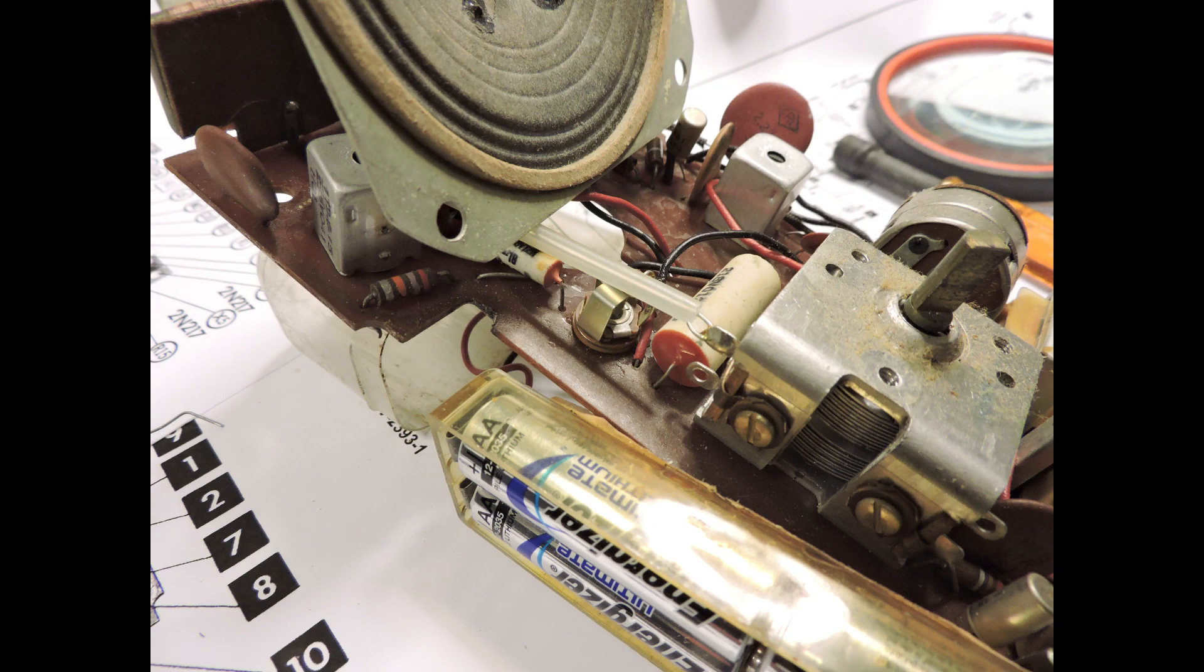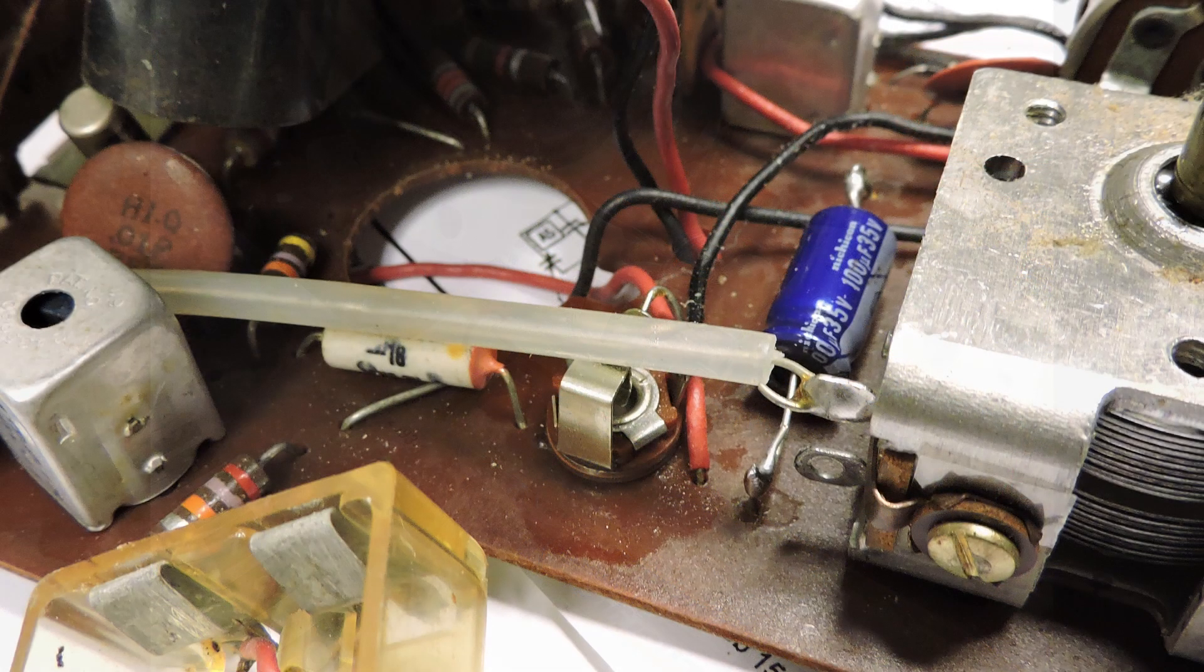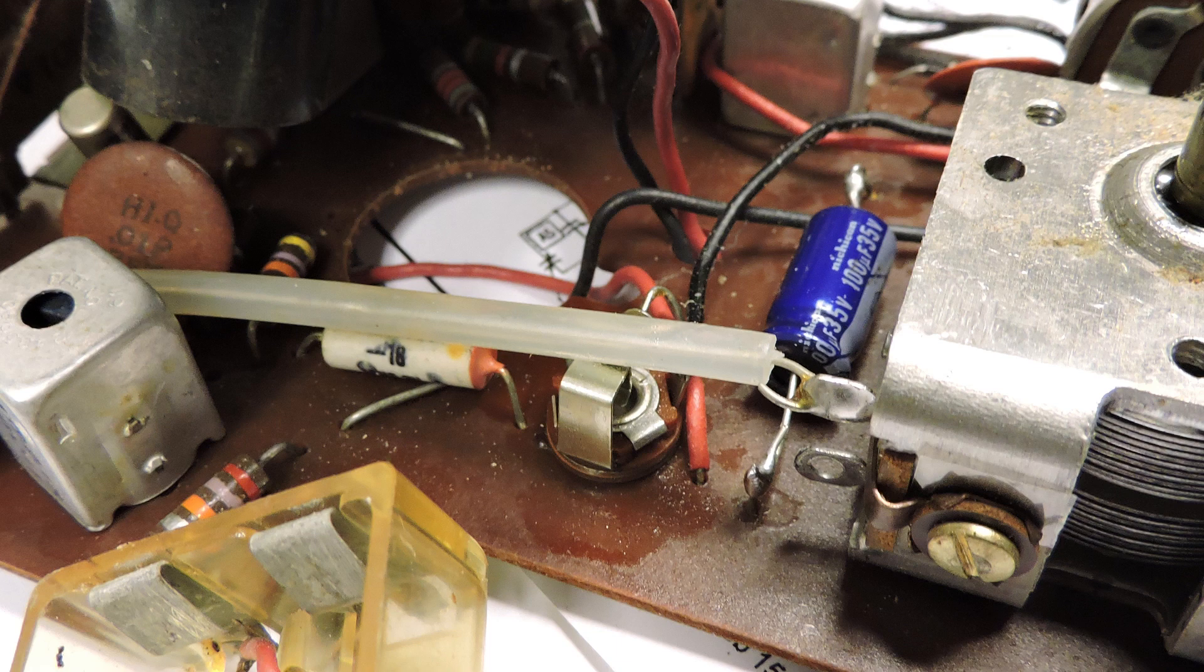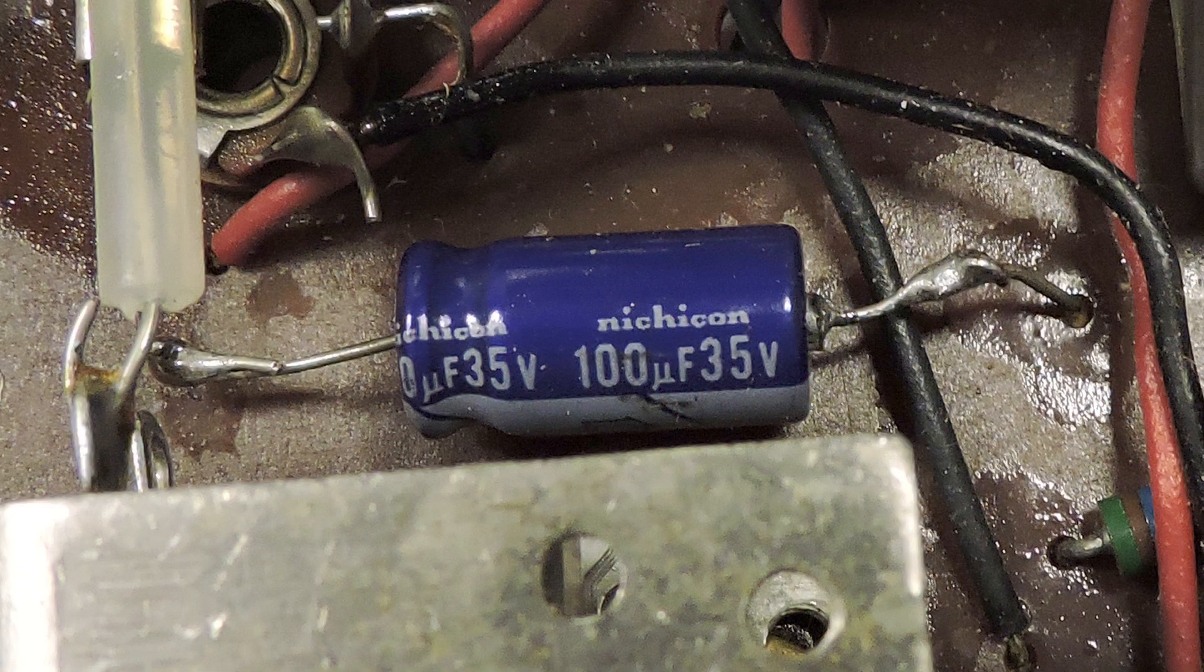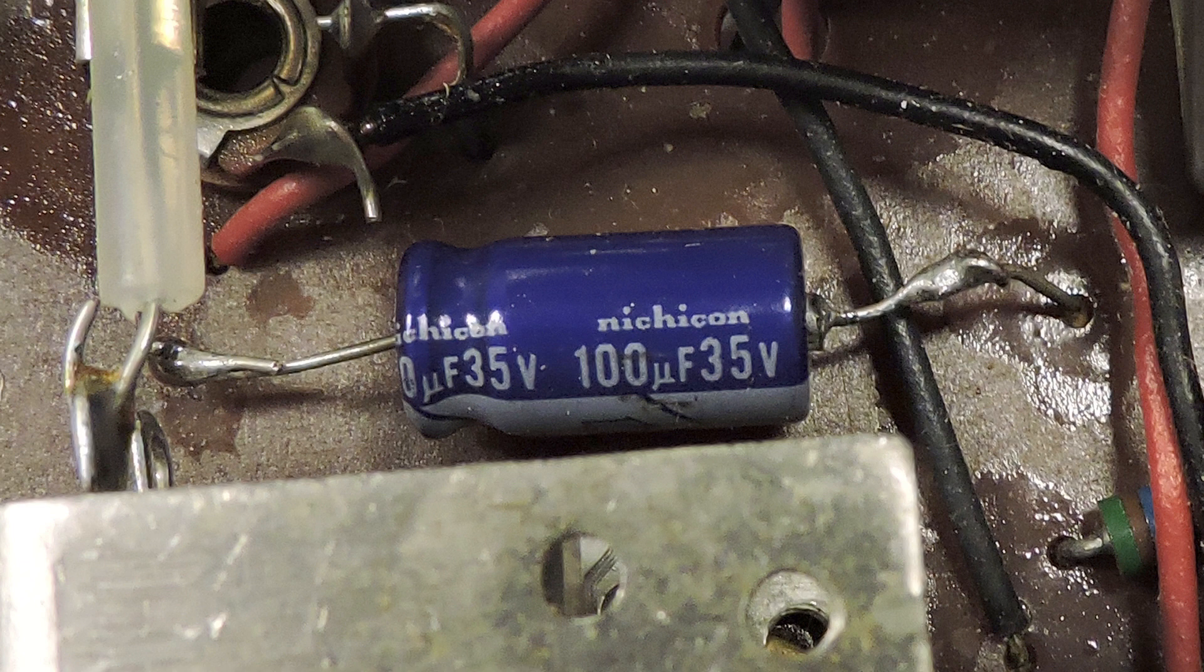So I heated up the soldering iron, and here I've replaced that capacitor. Notice that I left the original wires there. Here's a better shot of that so you can see what I did. This way, on the foil side of this circuit board, it doesn't look like I did anything at all.